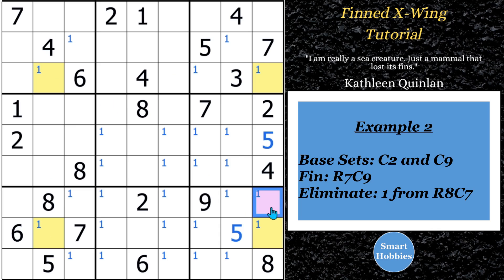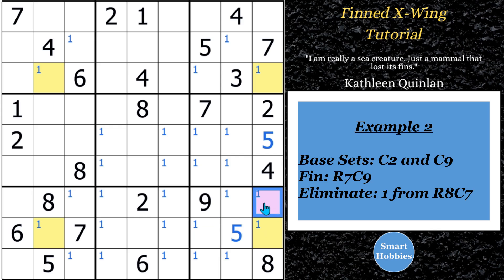So what elimination can you make right here? It's going to be this cell. You've got the fin: if the fin is true, this would not be a 1. If the fin is false, you'd have a nice looking X-Wing. So you eliminate all the 1s within the same block as the fin — you can eliminate a 1 from right there.